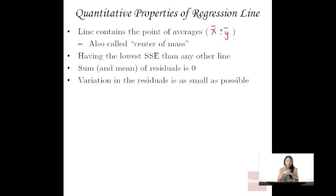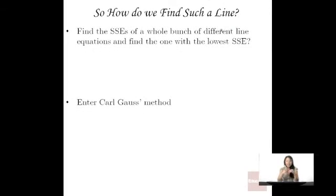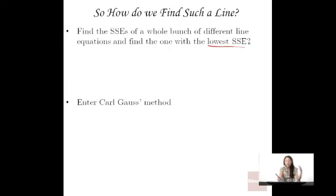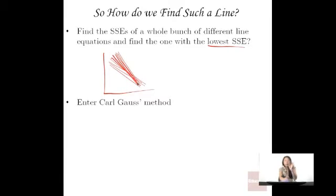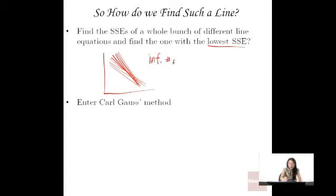Those are four very important quantitative properties. So this sounds like a wonderful, magical line — how do we find such a line? You might think we'd have to find the sum of squared errors for a whole bunch of different line equations and find the one with the lowest SSE. But that's problematic because there are an infinite number of lines — you could change the y-intercept by 0.0001 and you have a totally different line, or change the slope by a tiny amount. So there is an infinite number of potential lines we would have to test.